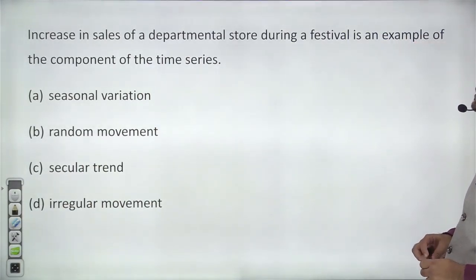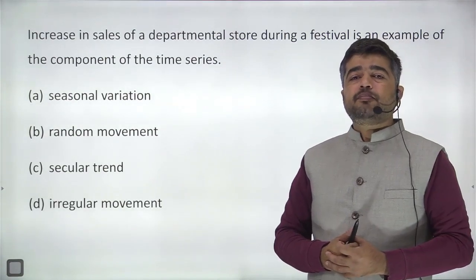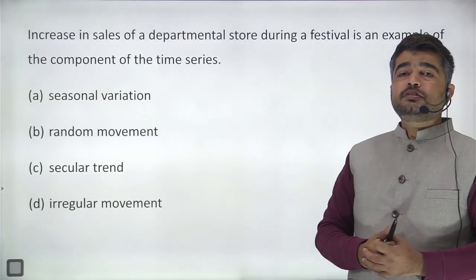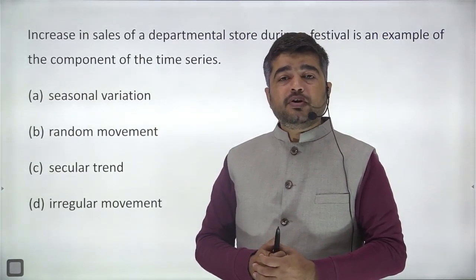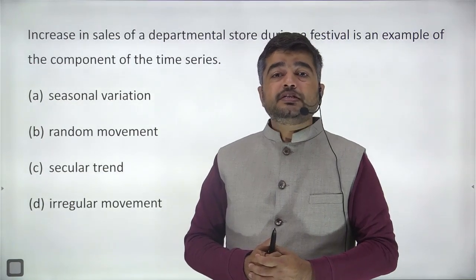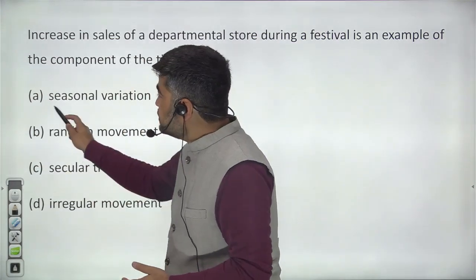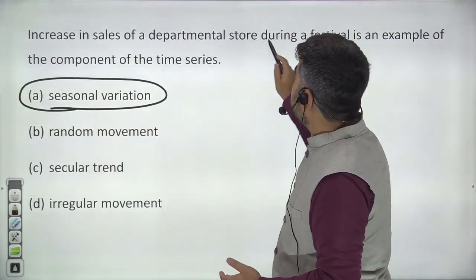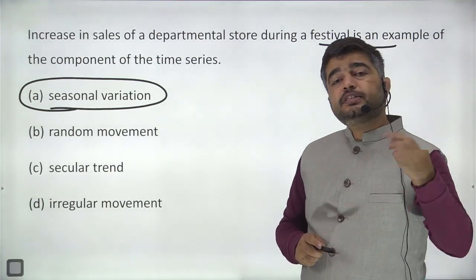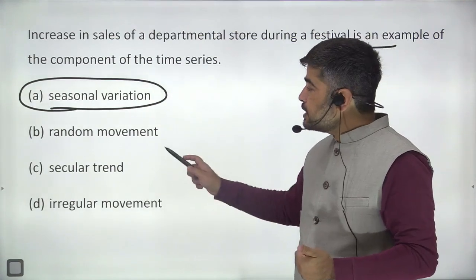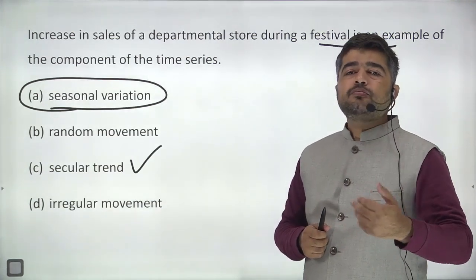Question five: an increase in sales of a departmental store during a festival is an example of which component of time series? There are many kinds of components: seasonal variation — like sales of ice creams increase in summer, sales of groundnuts increase in winter. These are seasonal variations. Here, since there is an increase in sales every festive season each year, this is seasonal variation.